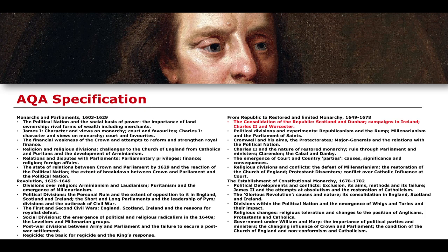Afterwards, we're going to talk about the development of the restoration of the monarchy in a limited sense. This is obviously with Charles II, and we will talk about the ways in which Charles II then gets pushed out towards the end as we get to the establishment of a constitutional monarchy from around 1678.